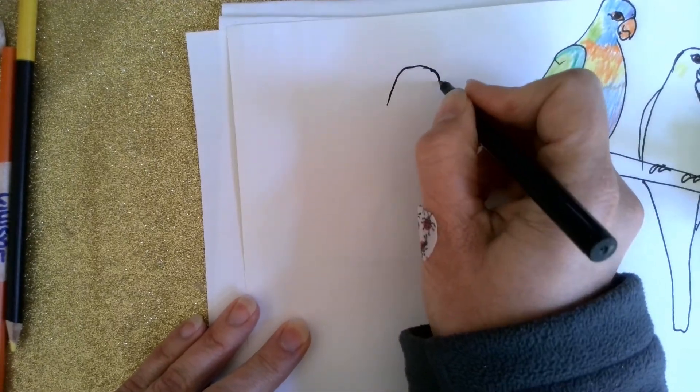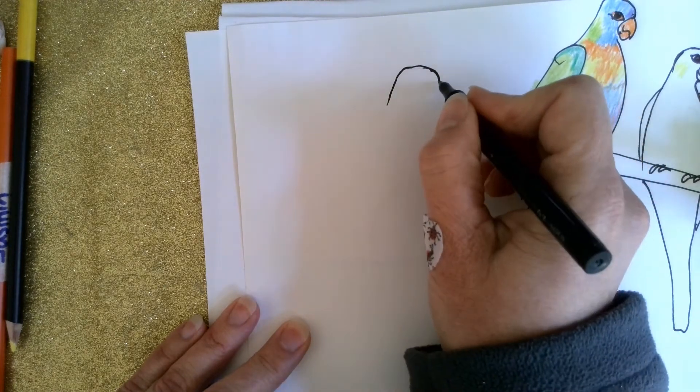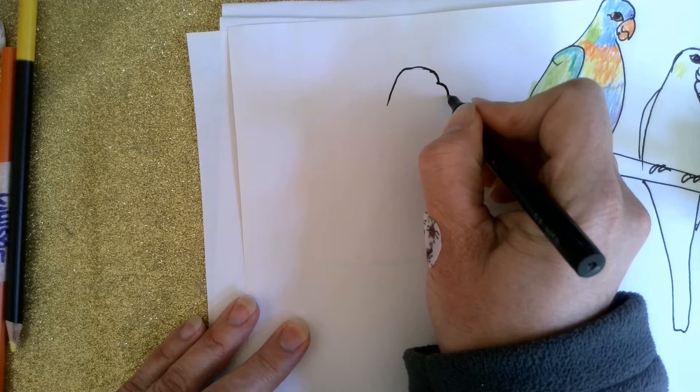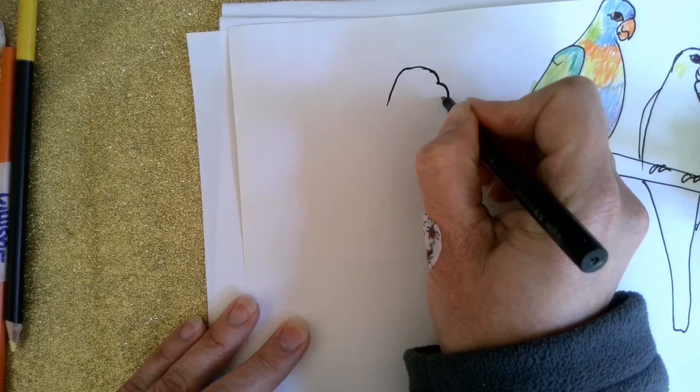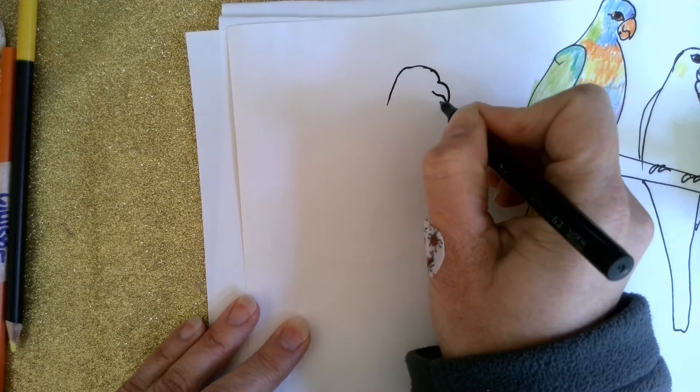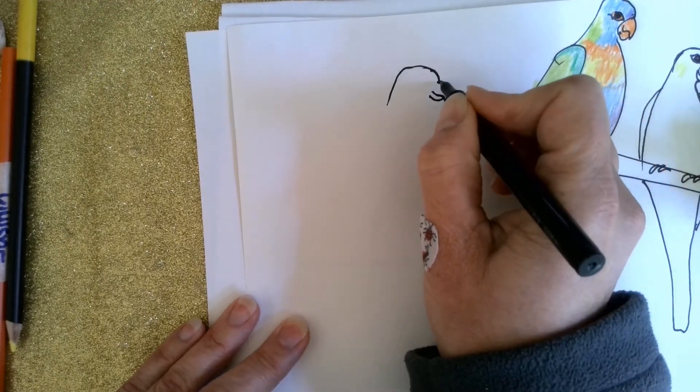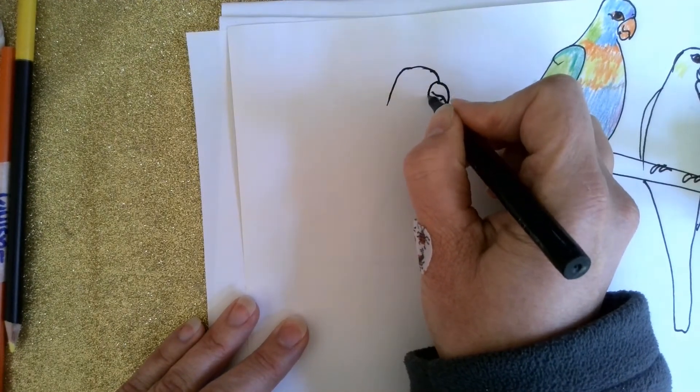The beak is going to come out from here, so a little curved line, and then we're going to go up and in. Then the lower half of the beak is smaller like that. We can do a line here.